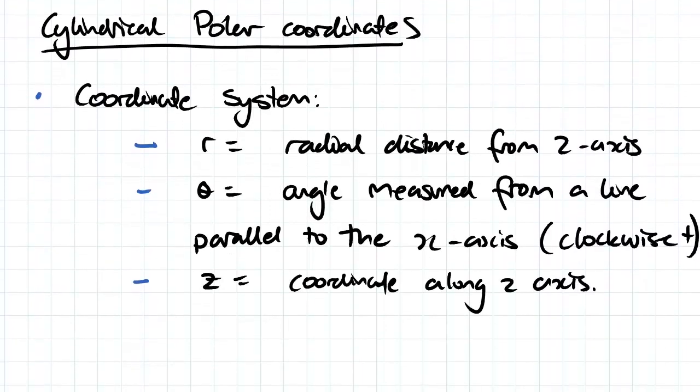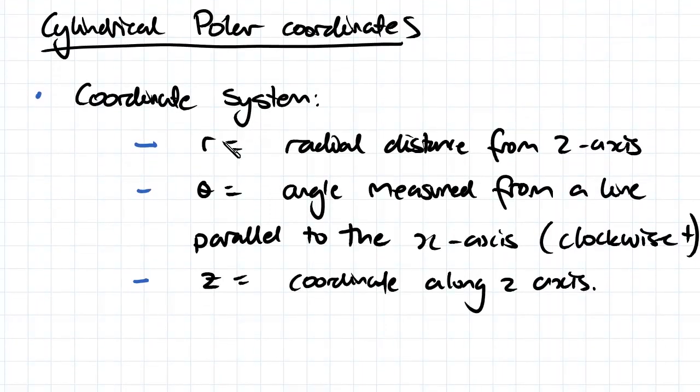So cylindrical polar coordinates—the coordinate system is in terms of the variables r, theta, and z, where r is the radial distance from the z-axis, theta is the angle measured from a line parallel to the x-axis (and clockwise is said to be positive), and z is the coordinate along the z-axis.